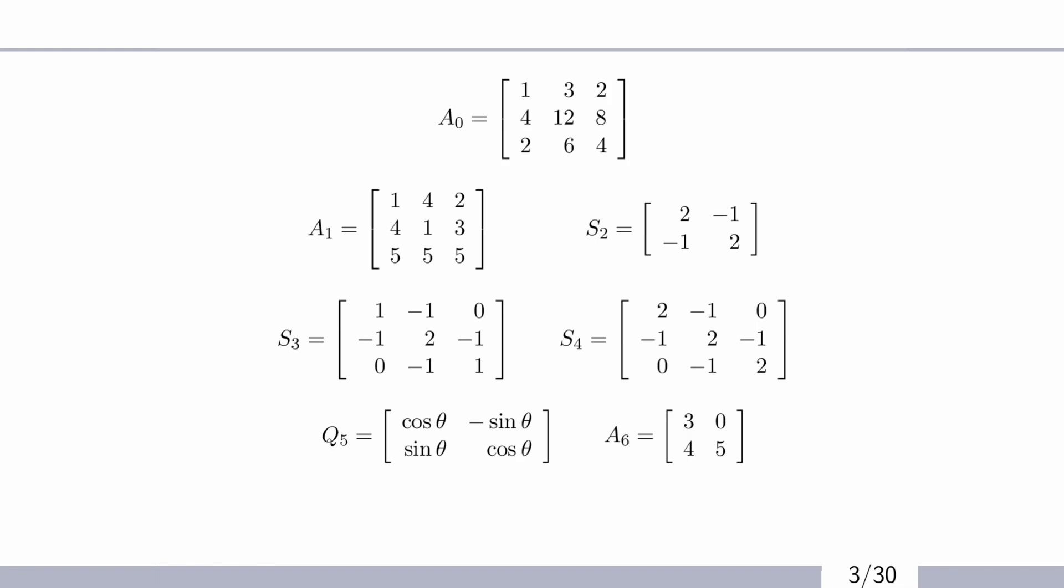And then what do you see for row 3? 2, 6, 4. And those are two vectors in the same direction. Why is that? Because 2, 6, 4 is exactly 2 times 1, 3, 2. And in the middle there is 4 times 1, 3, 2. So I have three rows in the same direction.